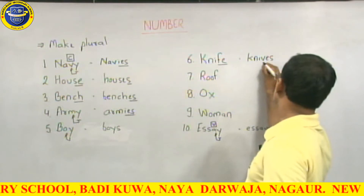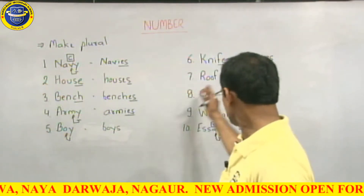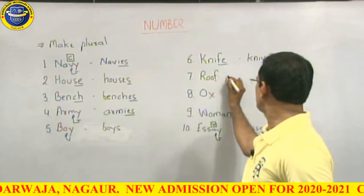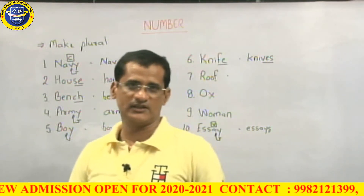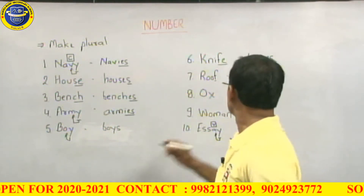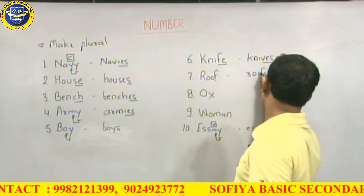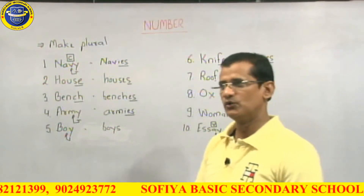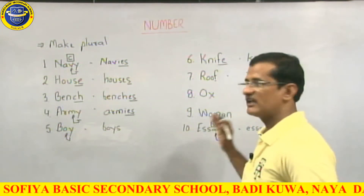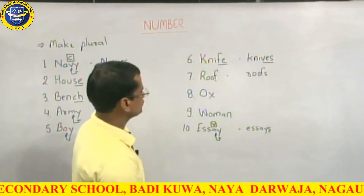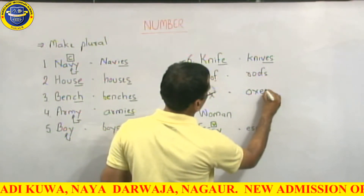There are some words such as Roof, which end in F or FE, but we have to remember the exception. Words like Roof, Hoof, Chief, Belief, Cleave, and Chef are exceptions we need to remember. For Ox, the plural form is irregular — we add E-N, so Ox becomes Oxen.